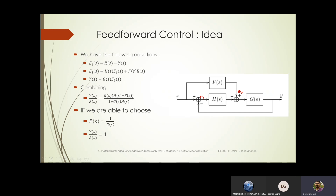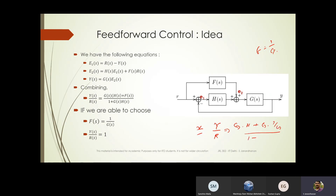What would happen if you choose F(s) = 1/G(s)? Then your Y/R becomes (GH + G·(1/G)) divided by (1 + GH), which turns out to be one. So choosing F(s) = 1/G(s) gives perfect tracking. Even if R(s) changes, F(s)·R(s) generates a corrective signal that compensates for the change in R(s) and tries to maintain Y equal to R.